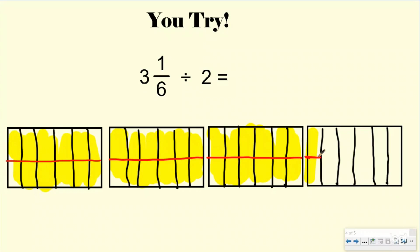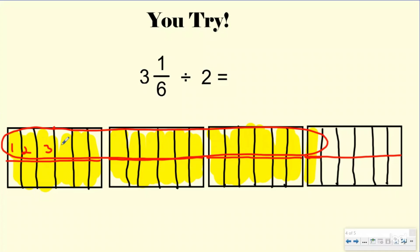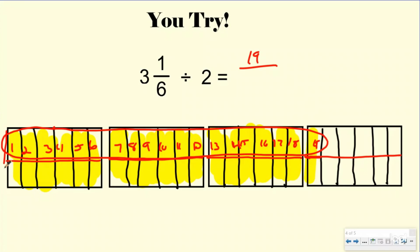Then what I want to do is split all of that into two equal groups. So go ahead and just draw that line all the way down, splitting each of your wholes into two equal pieces. Here is my one group — well, two groups I just made. How many are in each of those? One, two, three, four, five, six, seven, eight, nine, ten, eleven, twelve, thirteen, fourteen, fifteen, sixteen, seventeen, eighteen, nineteen. And your denominator would be twelve, because each whole is split into twelve equal pieces.